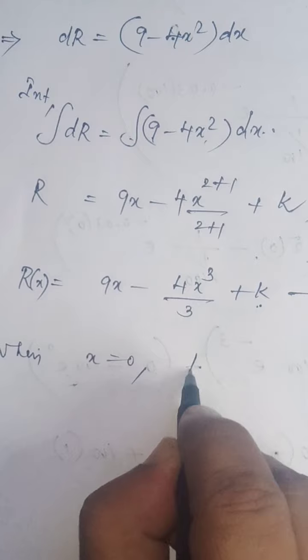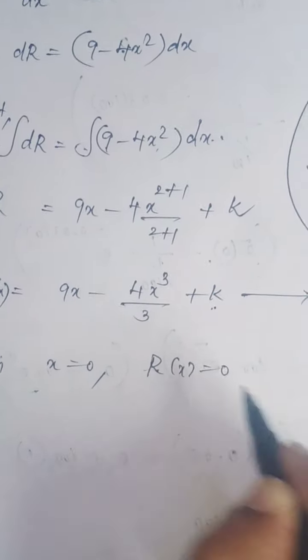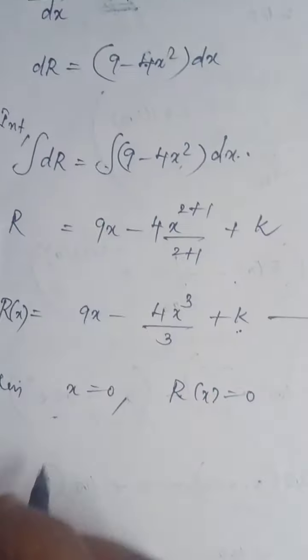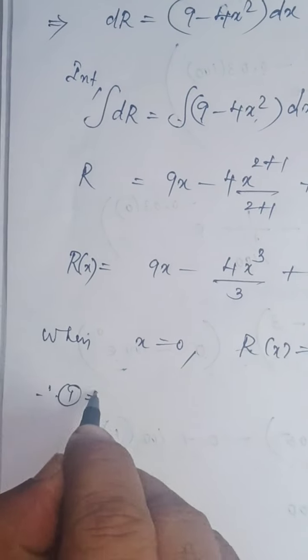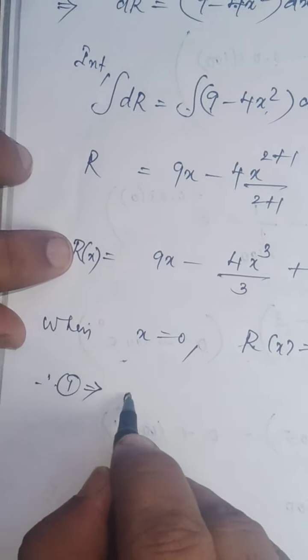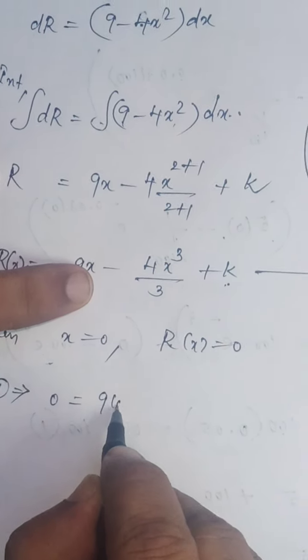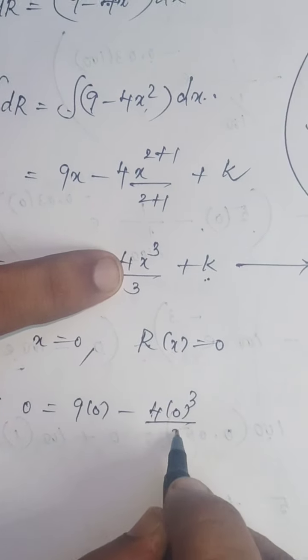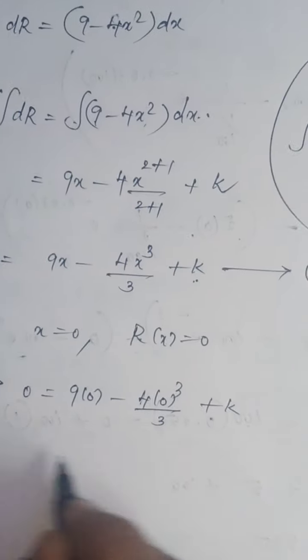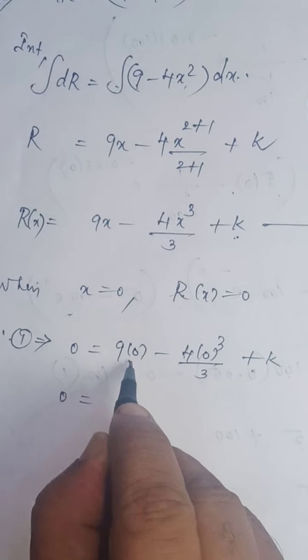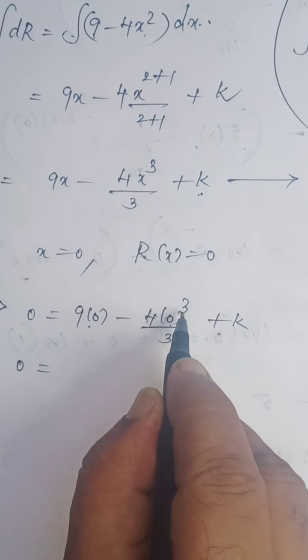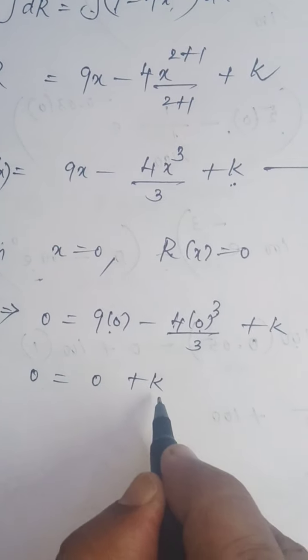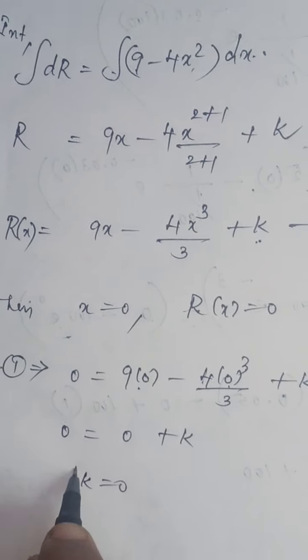When x = 0, R(x) = 0. Substitute in equation 1. Therefore equation 1 implies R(x) = 0 = 9(0) - 4(0)³/3 + k. 0 equals 9 times 0 is 0, 0 power anything is 0, 0 times anything is 0. Therefore k = 0.